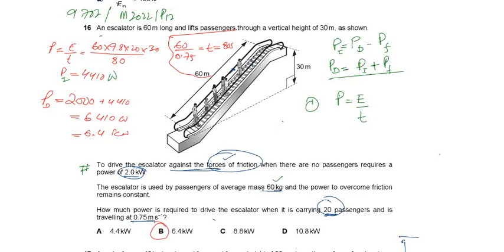9702 February, March 2020, Paper 1, Variant 2, and the topic is work, energy and power, question number 16.